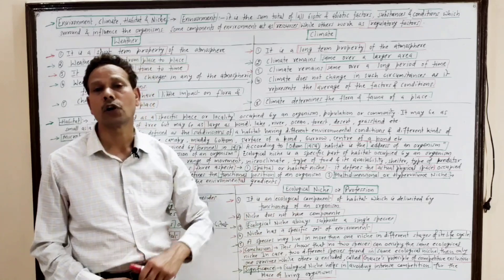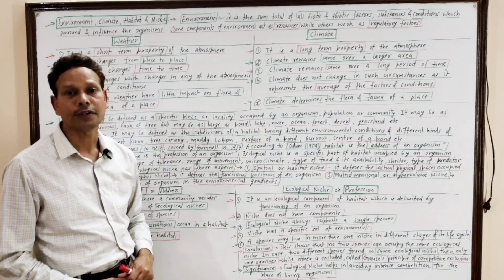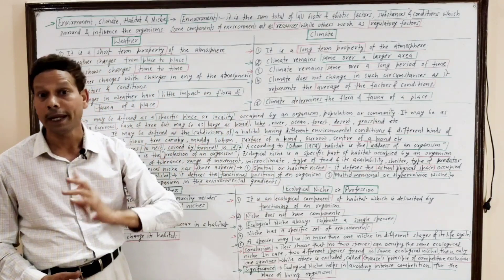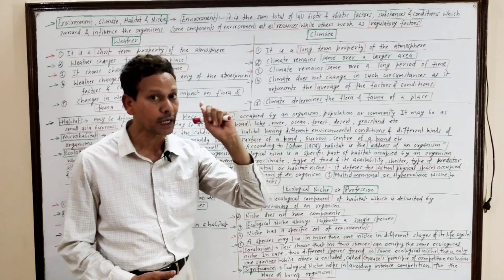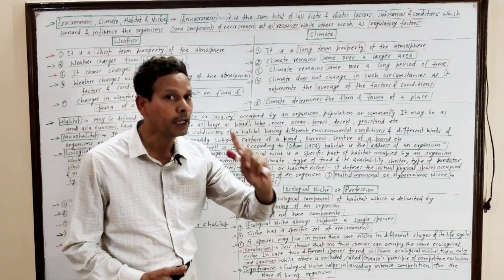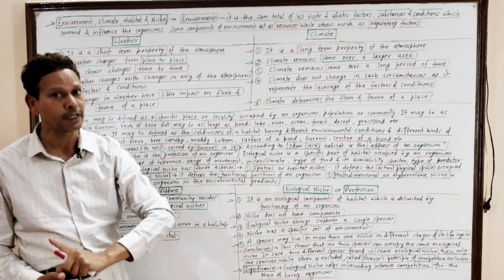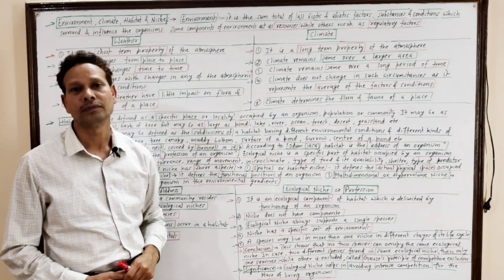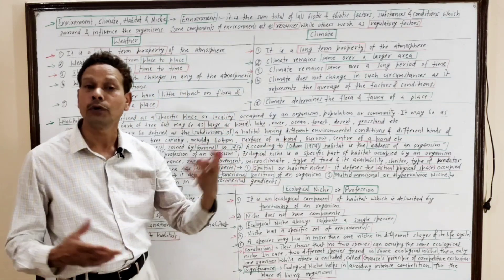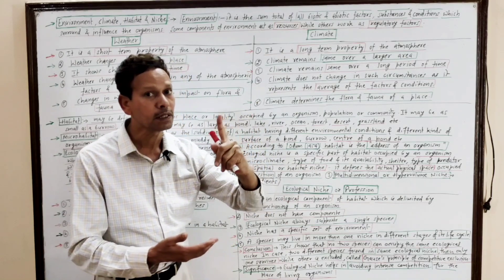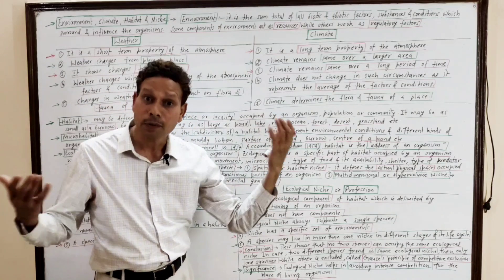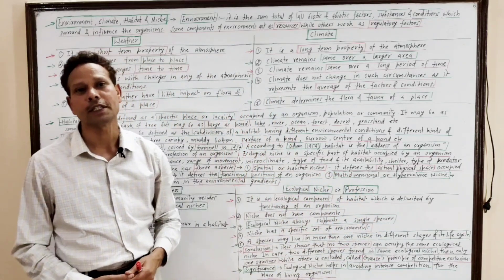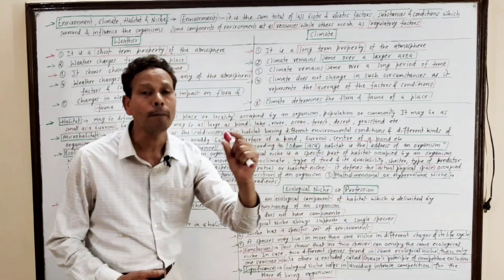The conclusion drawn from ecological niche is that no two species can occupy the same ecological niche. A particular ecological niche always supports a single species; no two different species can live together in one ecological niche. If two different species occupy the same niche, automatically one species will be excluded and only one species will survive. This is Gause's principle, also known as the Principle of Competitive Exclusion.